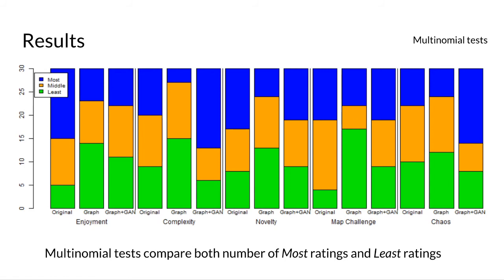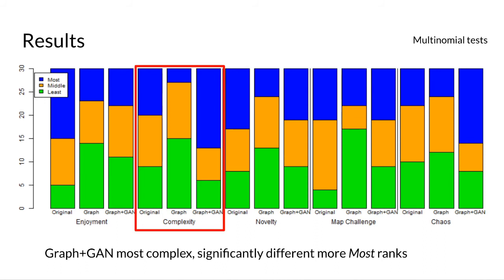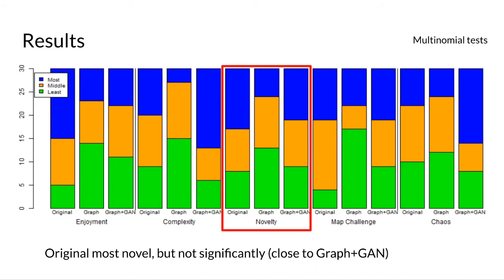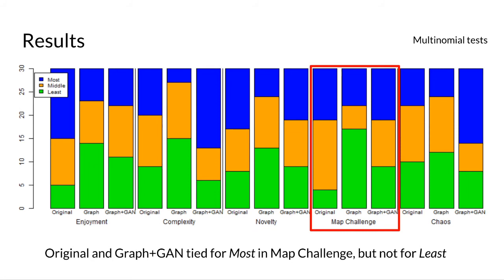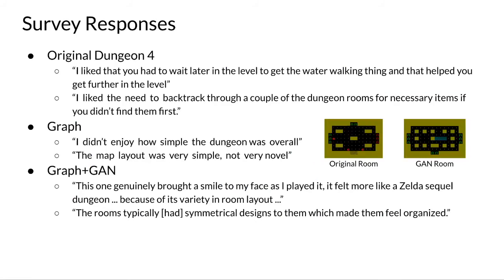These results are from the portion of the survey where participants ranked dungeons as most, middle, or least across multiple categories, using multinomial tests to compare the number of most and least ratings. The blue bar indicates most ratings. Looking at enjoyment, the original seemed most enjoyable but not significantly. The graphGAN dungeons were most complex with significantly more most rankings. In terms of novelty, the original was most novel but not significantly, as it was close to graphGAN. The original and graphGAN tied for most in map challenge, and the graphGAN dungeon was considered most chaotic but not statistically significantly so.